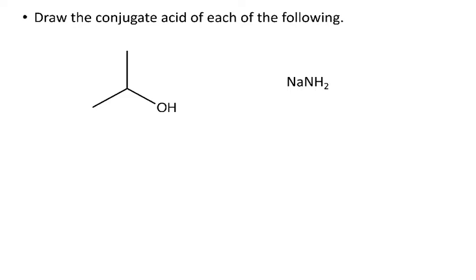Now we want to draw the conjugate acid of each of these. If we're looking for the conjugate acid, these things are acting like bases — proton acceptors — so we need to add protons. In this first case, none of the carbons have lone pairs, so the only option is for one of the lone pairs on the OH to attack the hydrogen from the acid. We're going to add the H+ to that oxygen.